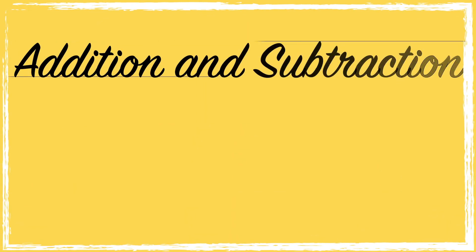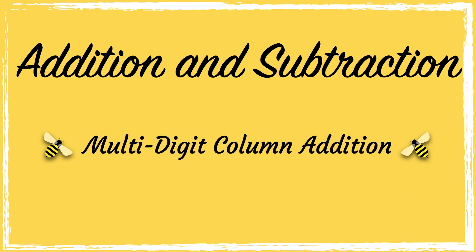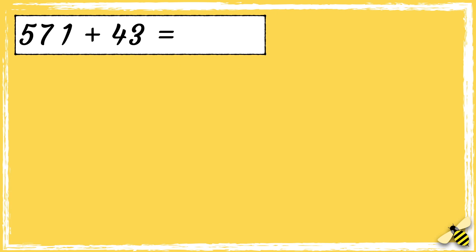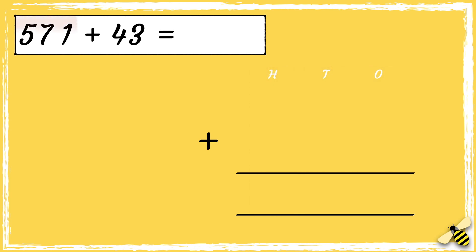In today's video we're going to do multi-digit column addition. Here is a number sentence: 571 add 43. It's really important to line the numbers up correctly when you're doing column addition, so we have the ones, the tens, and the hundreds. We have five hundreds, seven tens, and one one. Then we have four tens and three ones.